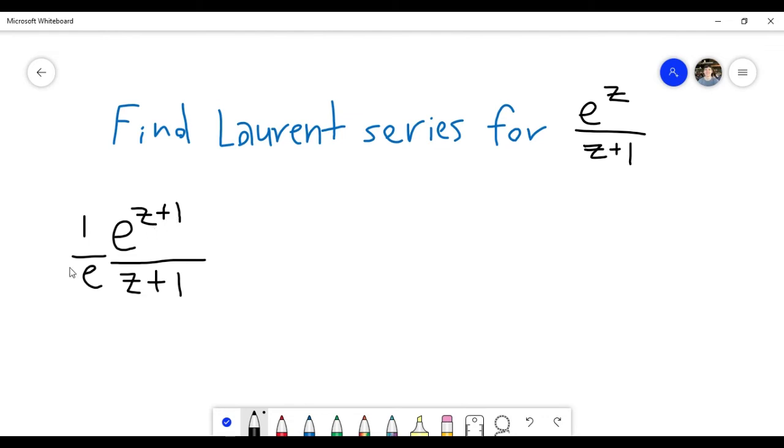But then this is useful because we know the Taylor series for e to the z. This is 1 plus z plus z squared over 2 factorial, and then so on.